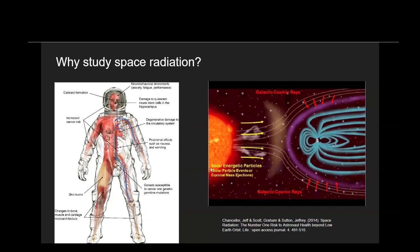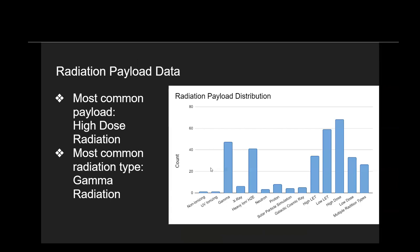Already we see that leaving low Earth orbit is more dangerous for astronauts, as Apollo astronauts who reached lunar orbit were significantly more likely to die from cardiovascular disease than astronauts who never left low Earth orbit or never flew. The life science studies in our repository are primarily focused on ionizing radiation, which poses a greater threat to biological organisms directly compared to non-ionizing radiation. The most common radiation payload we had was high-dose radiation, with a total of 68 studies, and the most common radiation type was gamma radiation, with 47 studies.